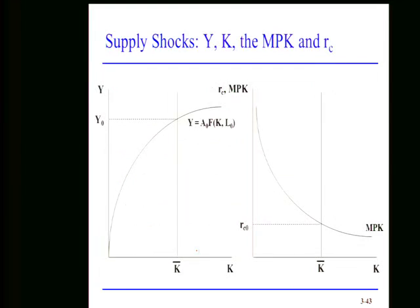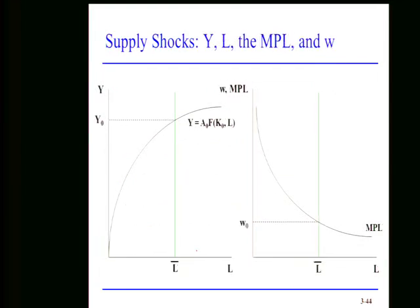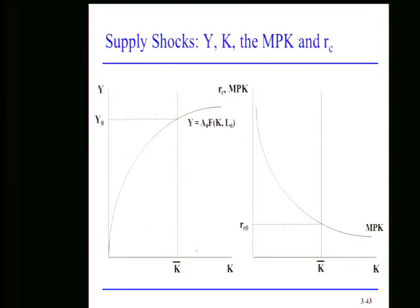Look at the two diagrams — output and capital, and output and labor — and process what happens with a decline in total factor productivity. We'll talk about it on Tuesday. Tomorrow morning the Department of Labor will announce the increase in payroll employees — the net amount of hiring in August — and the unemployment rate for August. You should know both numbers by Tuesday afternoon. Have a great weekend; I'll see you on Tuesday.